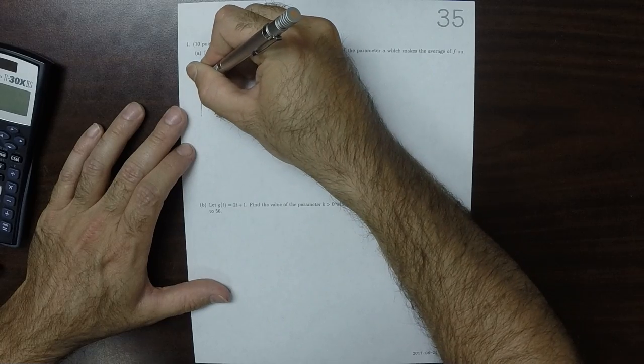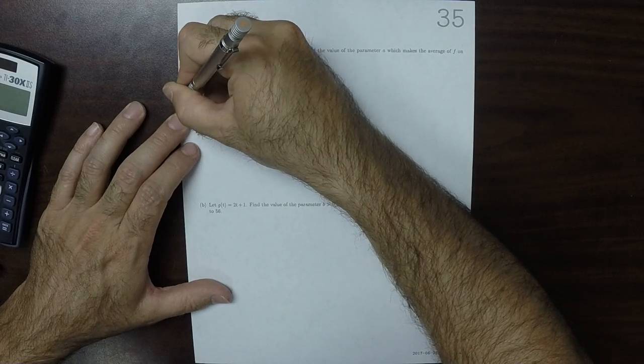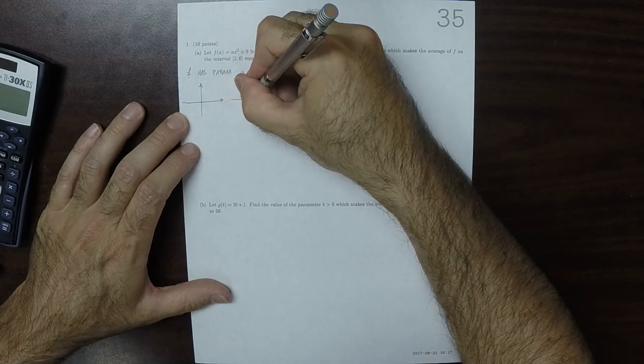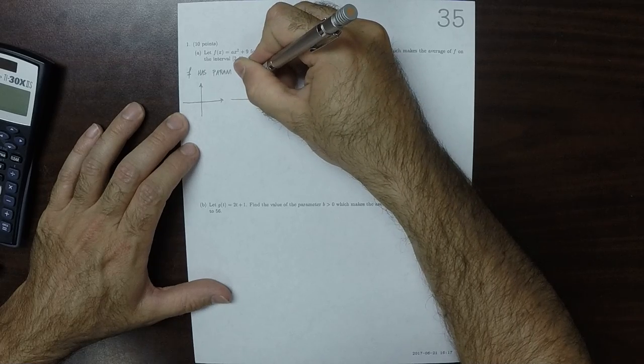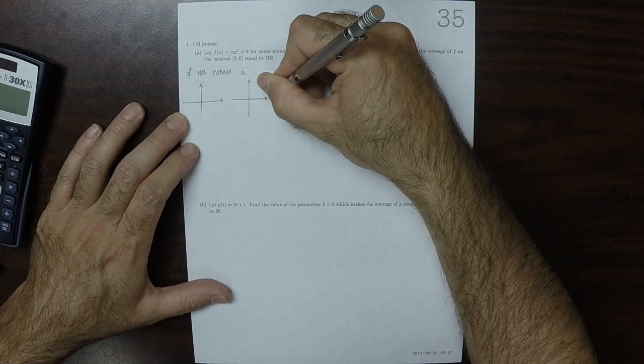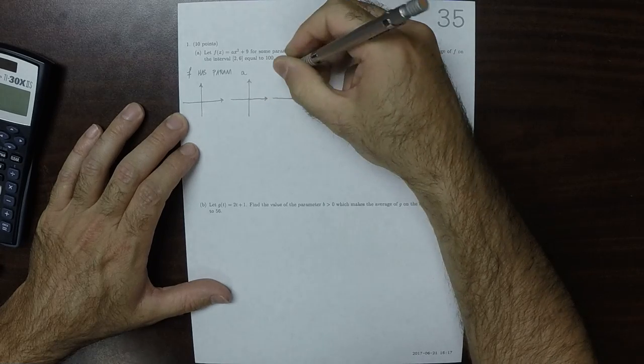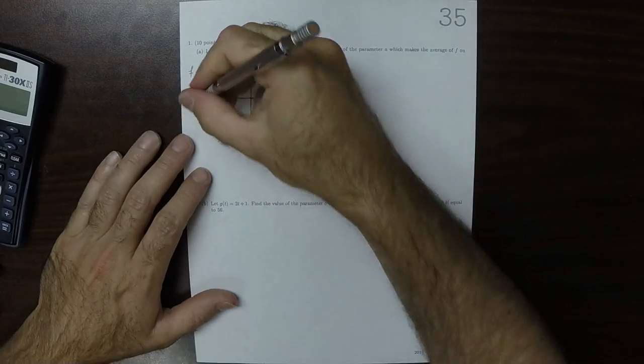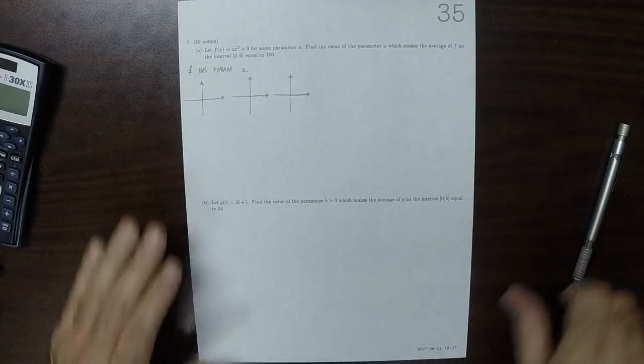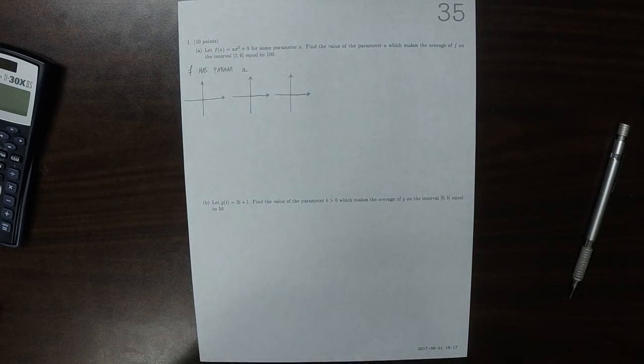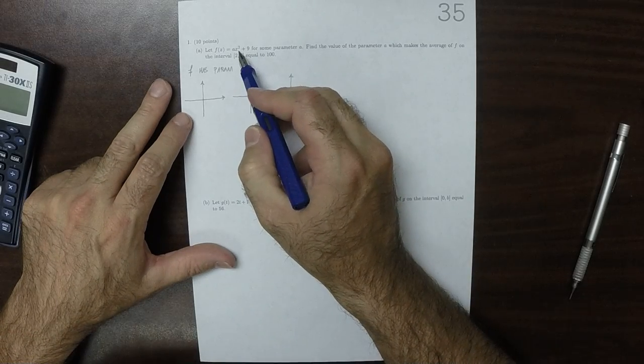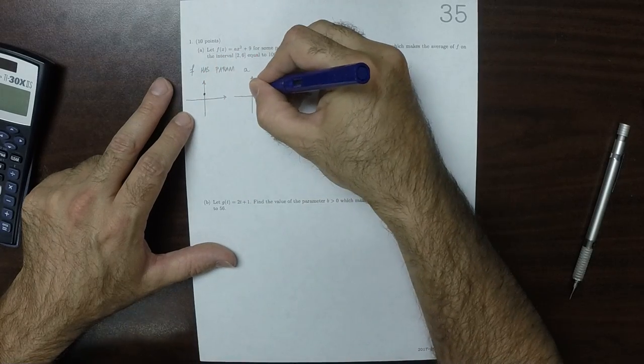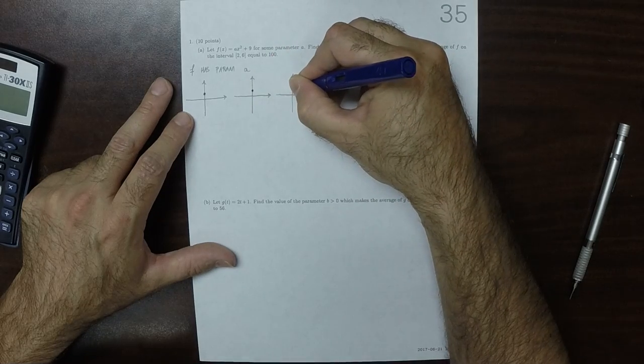Let's look at the various ways that f might appear. Here's three possible drawings. Regardless of the value of a, when you plug in x is 0, you get 9. So, 0, 9 is a point, no matter what a is.